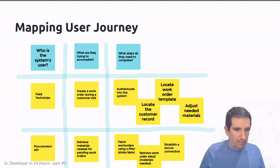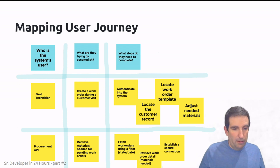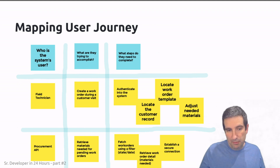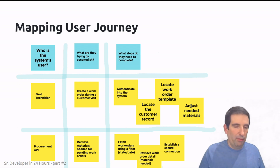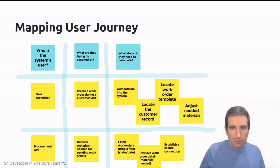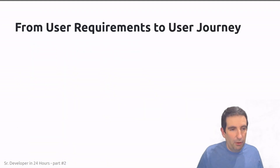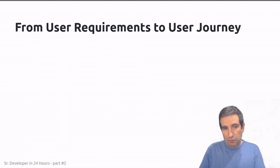For example, the procurement API would fetch work orders using a particular filter, retrieve the work order details, and establish a secure connection — providing some kind of credentials or token to ensure security. Using this methodology, we can go from user requirements to concrete, cohesive user journeys. At the end of the exercise, each journey should tell us who the user is, what they're trying to accomplish, and what steps they need to complete.